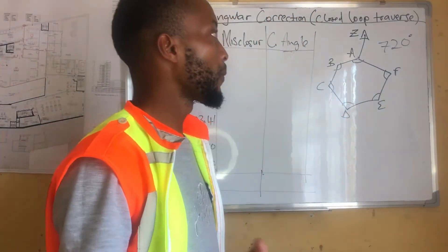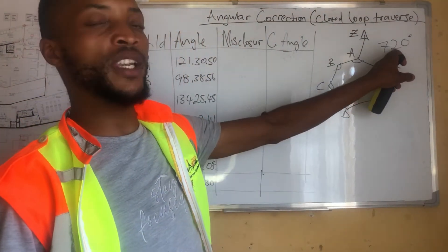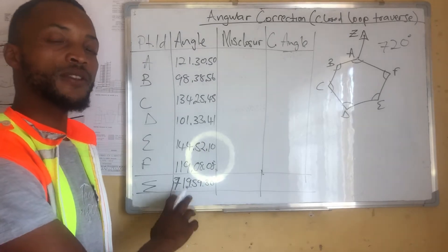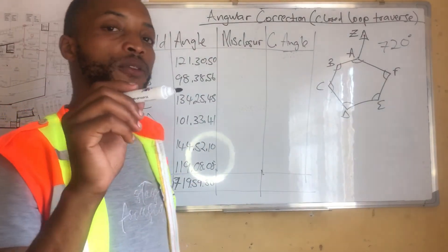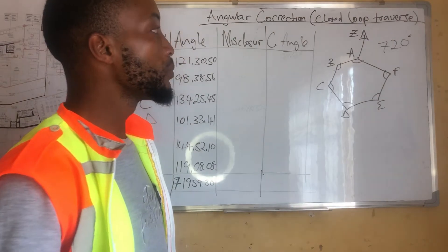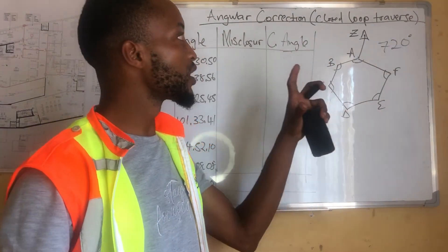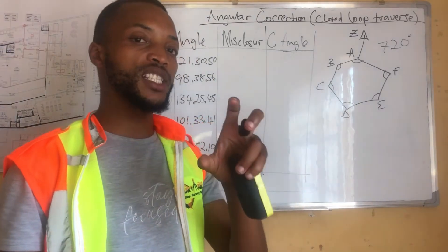And we are expected to be getting 720 degrees, like I said before. If we say 720 degrees subtract the 719 degrees, 59 minutes, 30 seconds, we'll get a difference of 30 seconds. Which means our closed loop is not closed. It has a misclosure of 30 seconds.